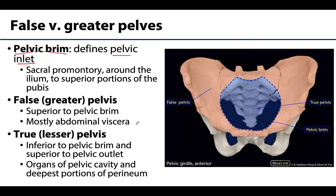The false pelvis, often referred to as the greater pelvis because of its larger size, is going to be superior to the pelvic inlet and is typically occupied by abdominal viscera — things such as the ileum and the sigmoid colon, identified here in this peach color.